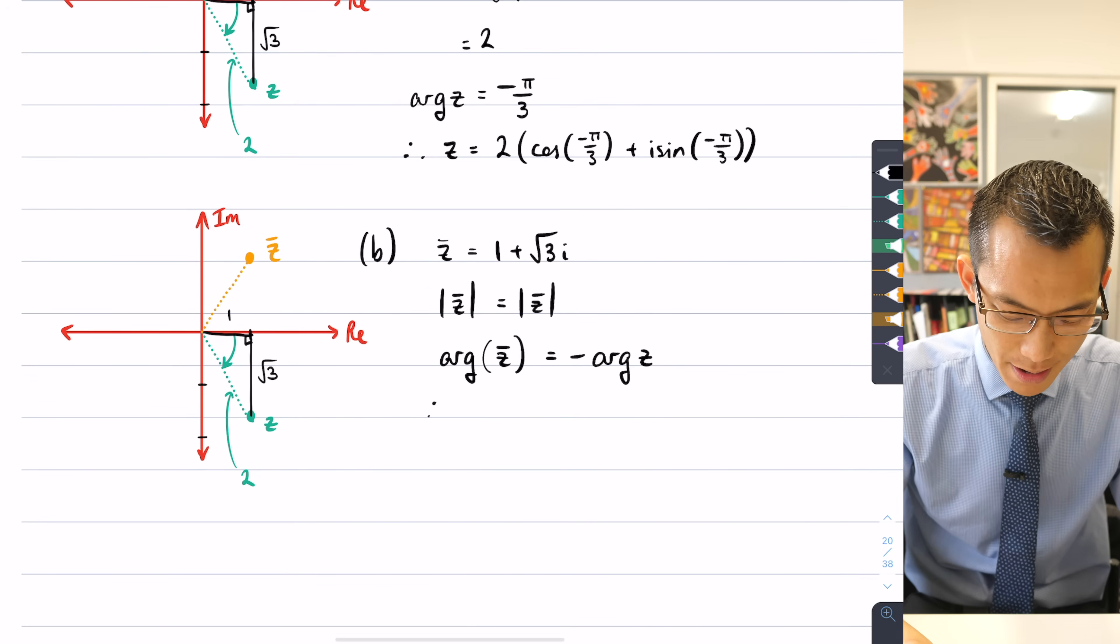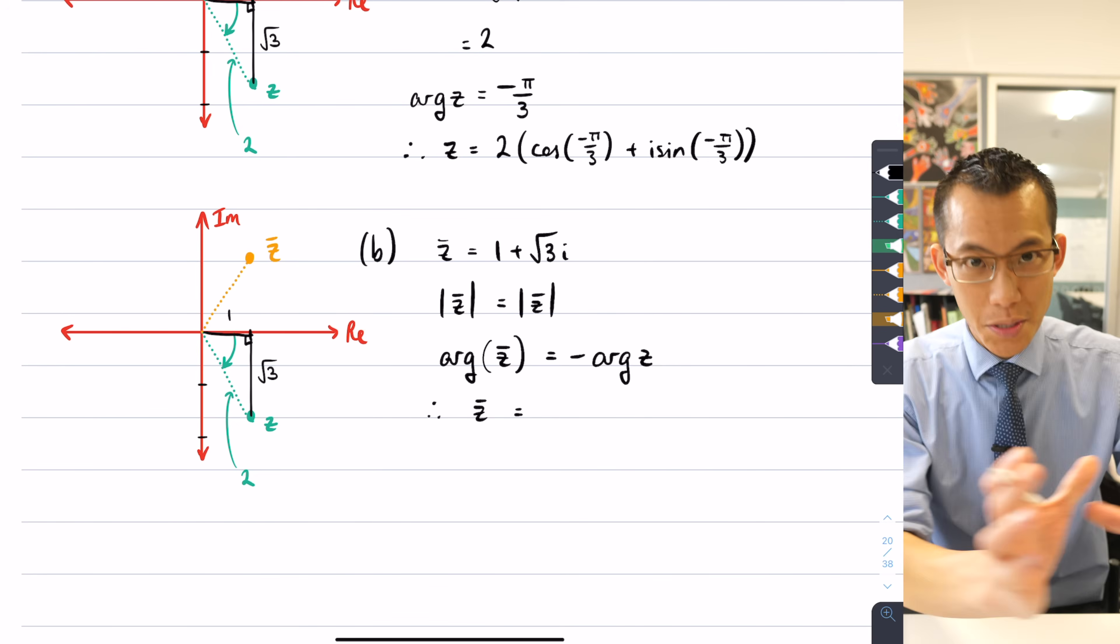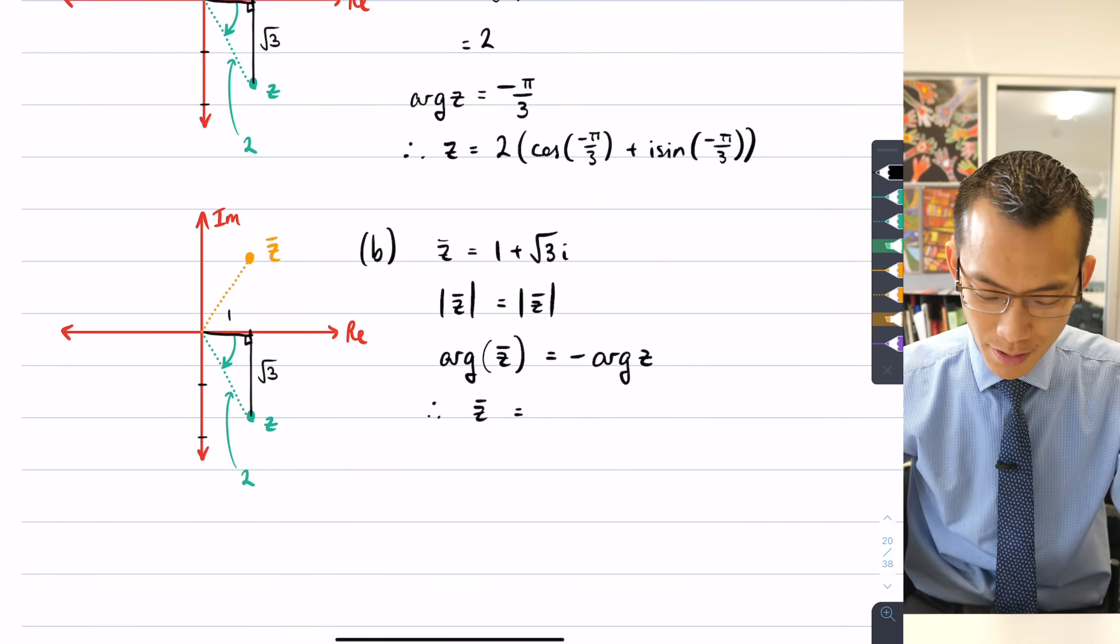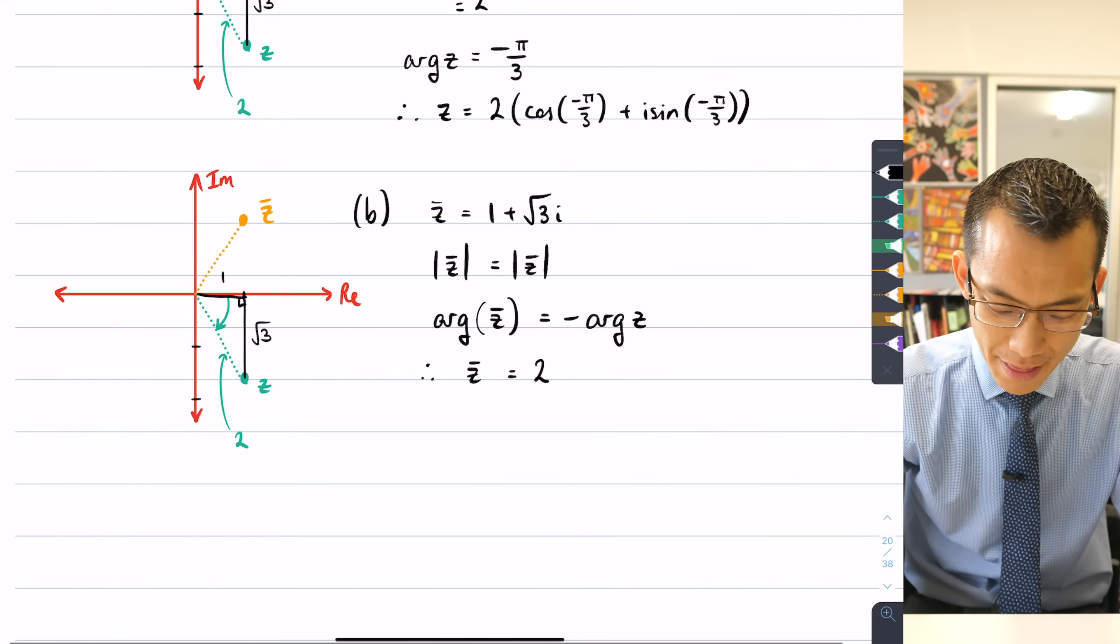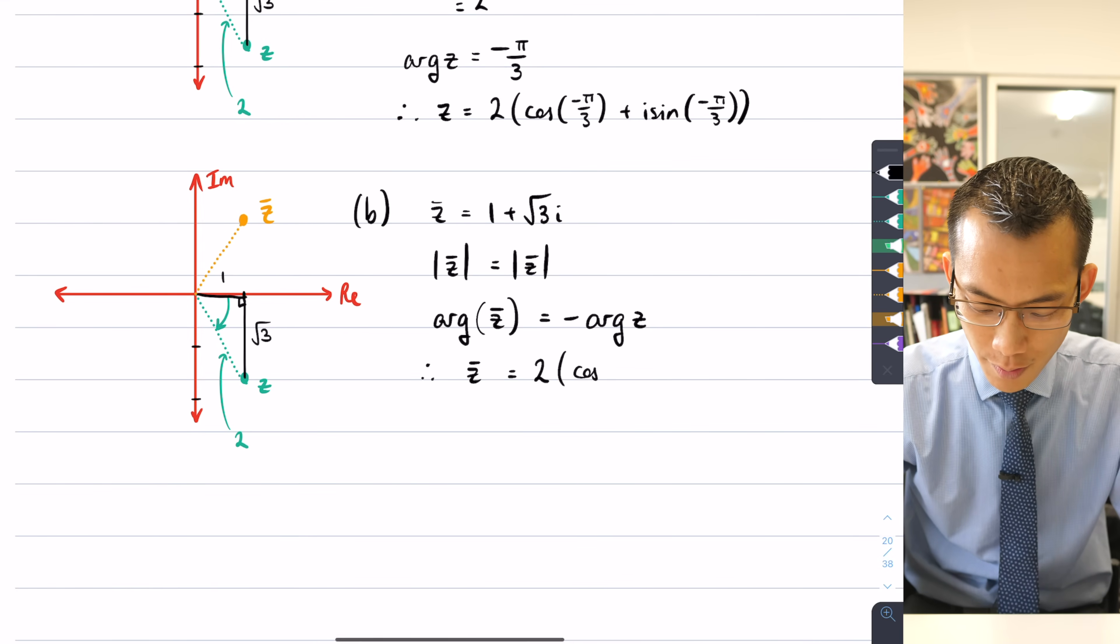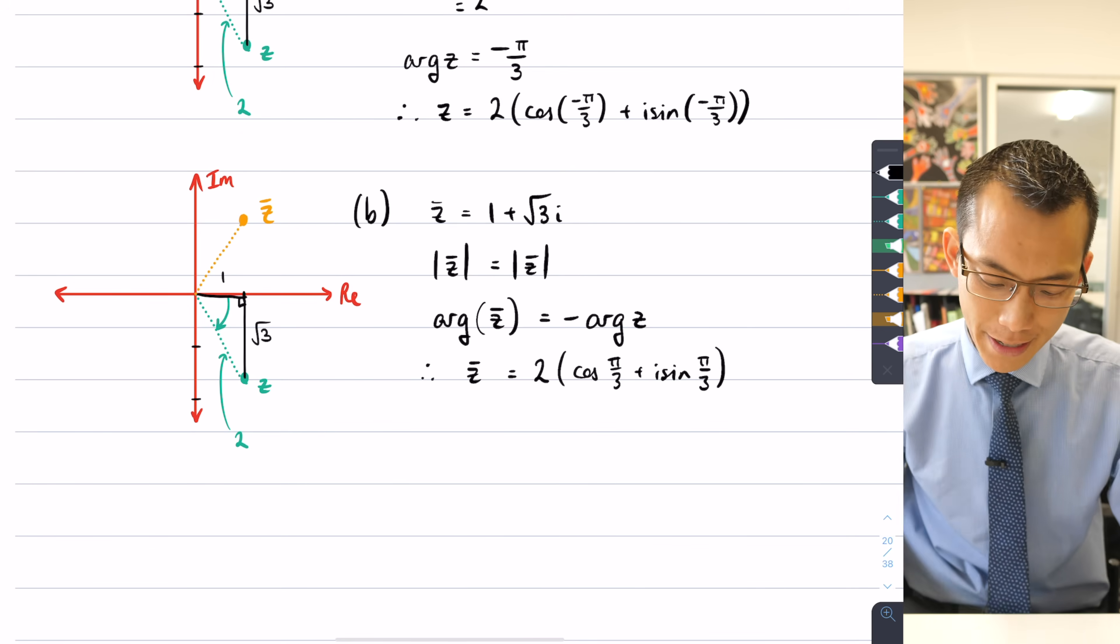So therefore, I can say z̄ equals, let's write it in r(cos θ + i sin θ) form, that's mod arg form. You're going to get the same two, same modulus as before, and then I'm going to write in cos(π/3) + i sin(π/3).